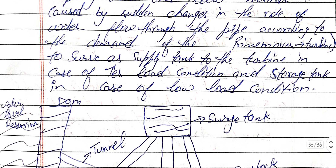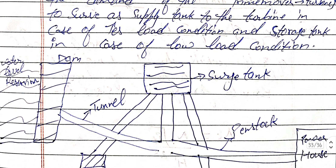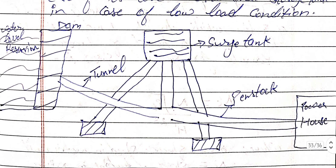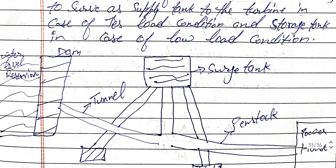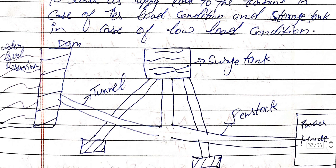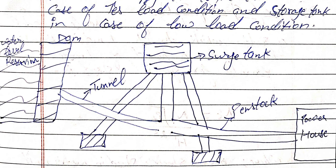This is the diagram for the surge tank. On the left side is the water level reservoir and the dam. The surge tank is connected by a tunnel, and the penstock connects the surge tank to the power house.